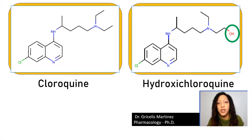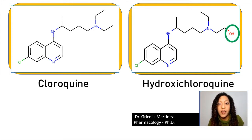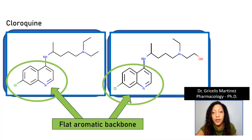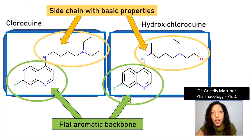These are the molecular structures of chloroquine and hydroxychloroquine, and the only difference between them is the hydroxyl group. They are known as 4-aminoquinolines; they have a flat aromatic backbone and a side chain with basic properties.